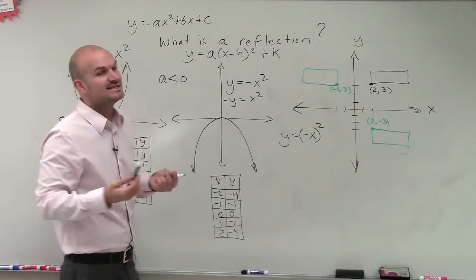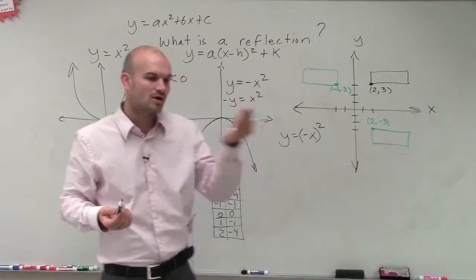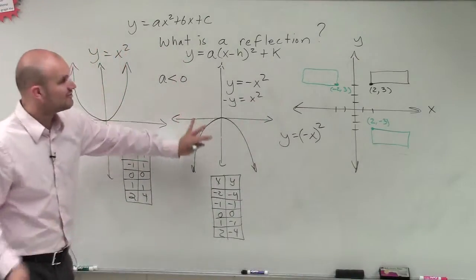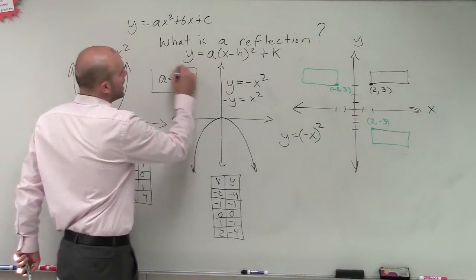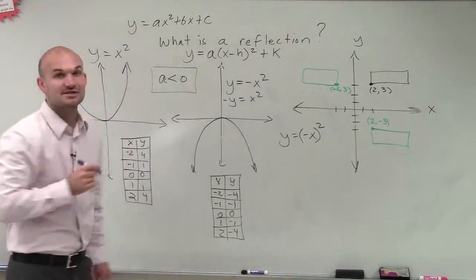So therefore, we're not really going to be dealing with horizontal reflections, but really only vertical reflections. And our vertical reflections are only going to come when our a is less than 0.